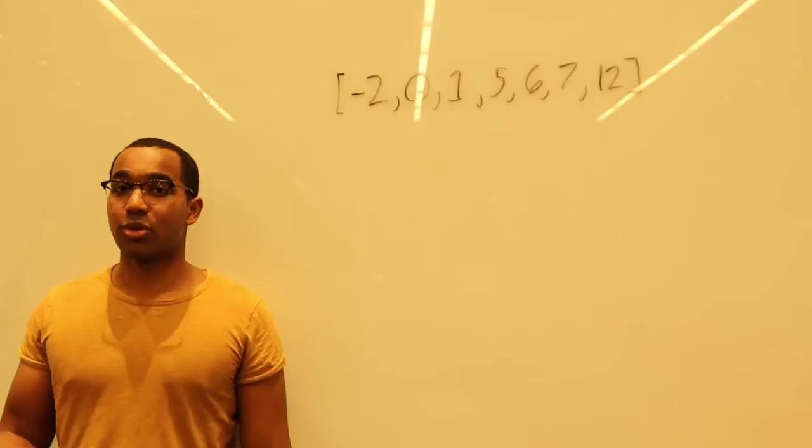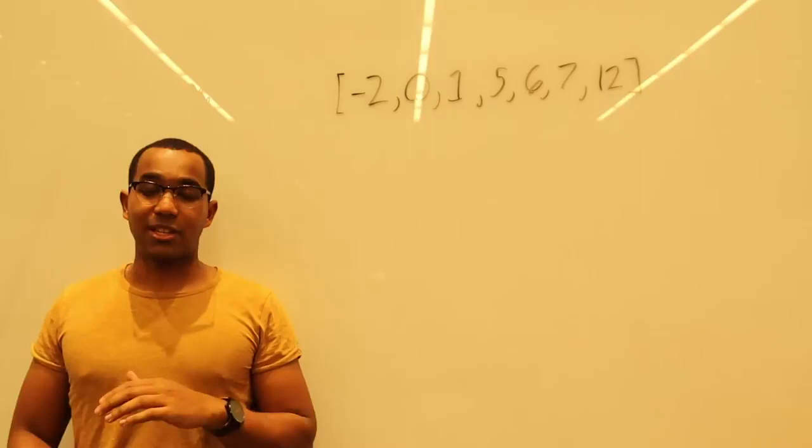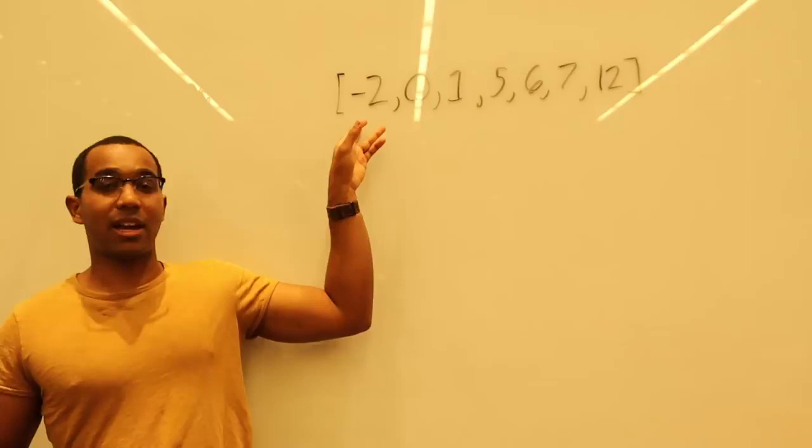And what we want to do is, from a sorted array, build as balanced a tree as possible. So we don't want to just have it skewed one way, like a linked list saying negative two, zero, one, five, six. We want it to be balanced.